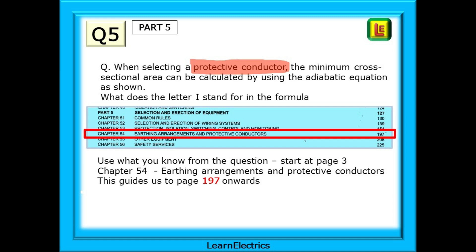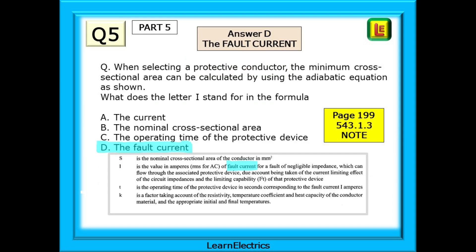Scan down and find part 5. And there is chapter 54. Earthing arrangements and protective conductors. Page 197. So let's go there. We are just two pages from the answer in a matter of seconds.